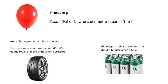Some examples: atmospheric pressure — the pressure of the air in the room you're in at the moment — is about 100 kilopascal, or 100,000 Pascal. The pressure in a car tyre is about 400 kilopascal, about four atmospheres, or about 300 kilopascal above atmospheric pressure. The oxygen in these cylinders is about 14,000 kilopascal — about 14 megapascal, 14 million Pascal.